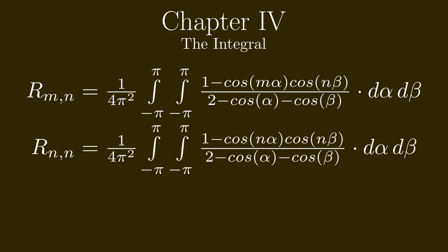Since the integral is rather hard to solve, we limit our view to the diagonal resistances where m is equal to n. Note that this also allows us to find the resistance that we were initially looking for. Where n is 1, we get R_1,1.